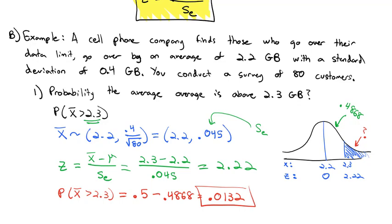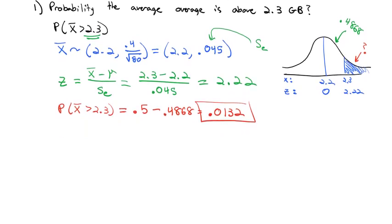There's about a one and a third percent probability that if I interview 80 customers, I'll get a mean bigger than 2.3. And that's the idea of the central limit theorem. We're shrinking the standard deviation by dividing it by the square root of the sample size. Whenever we have a sample, we need to divide by the square root of the sample size.